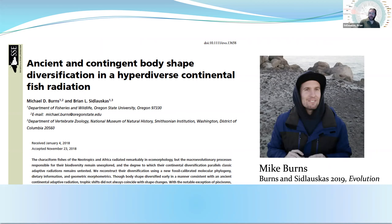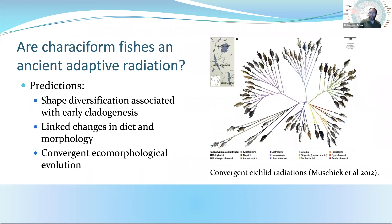I'm going to talk about two recent papers today. The first one is from 2019, published by my former doctoral student Michael Burns in association with me. This is the first study that really synthesizes a lot of information about anatomy and ecology with what was known about phylogeny at the time. Our paper was titled 'Ancient and Contingent Body Shape Diversification in a Hyperdiverse Continental Fish Radiation.' The central question was whether characiform fishes overall represent an ancient adaptive radiation.